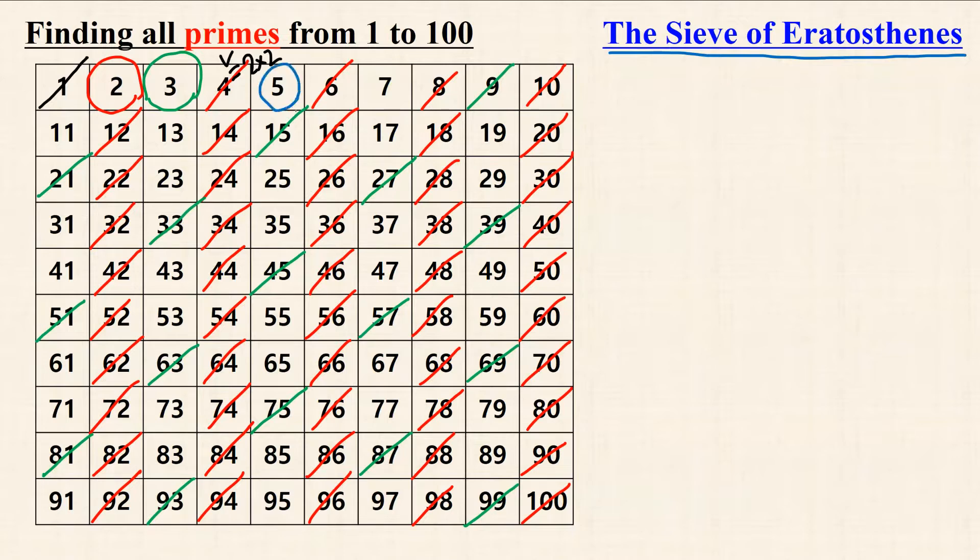Next, delete all multiples of 5. Next is 6, but we also skip 6. Since 6 is 2 times 3, so all multiples of 6 are already deleted. Next, delete all multiples of 7.